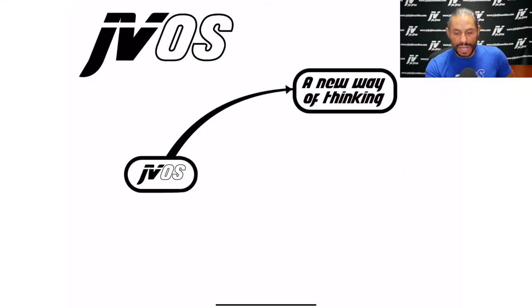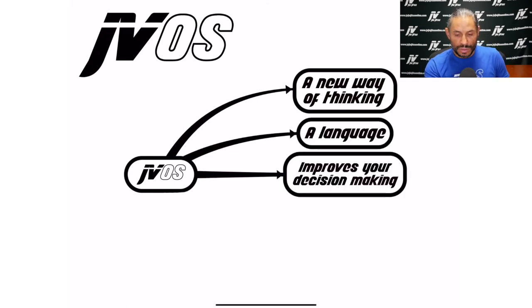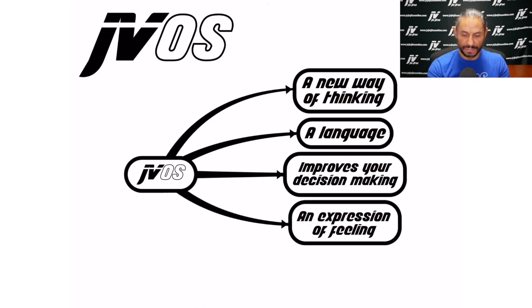JVOS is a new way of thinking. It is a language. It improves your decision making. It is an expression of feeling and it maximizes efficiency.